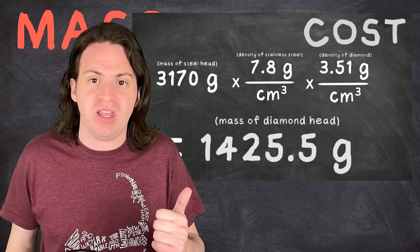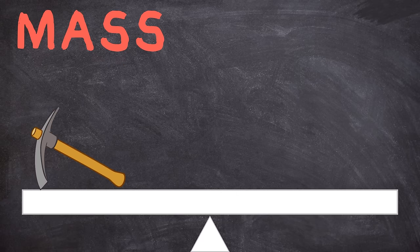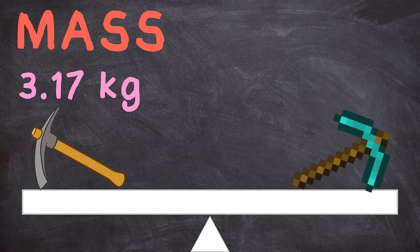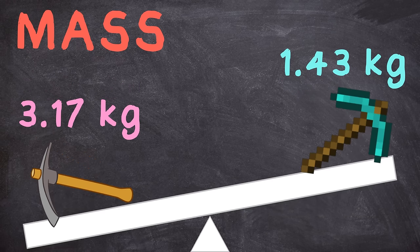And finding the mass of a diamond pickaxe is surprisingly easy because we literally just did it in the cost calculations. A stainless steel pickaxe has a mass of 3.17 kilograms and a diamond pickaxe of equal size would have a mass of 1.43 kilograms, over twice as light.